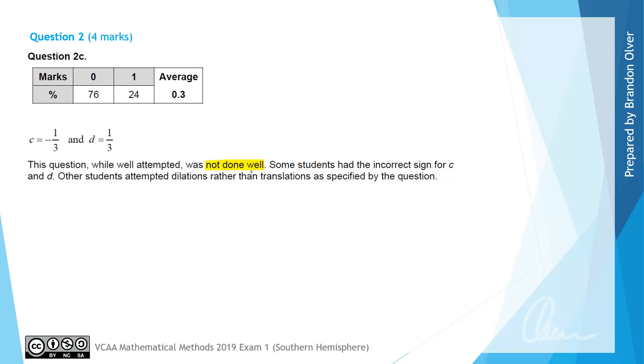Some students had the incorrect sign for c and d. It needed to be c equals negative 1/3, which would translate the graph in the negative x direction as required. d was positive 1/3, translating the graph 1/3 of a unit in the positive y direction. Other students misinterpreted the transformation matrix and attempted dilations rather than translations as specified by the question.